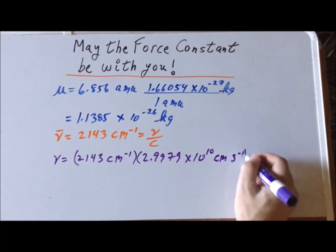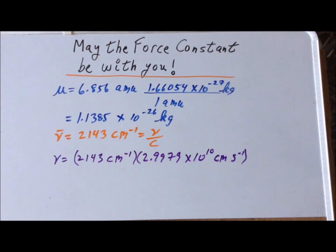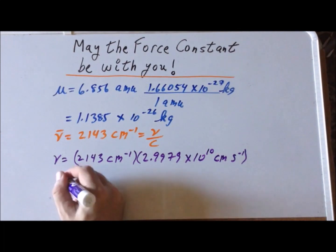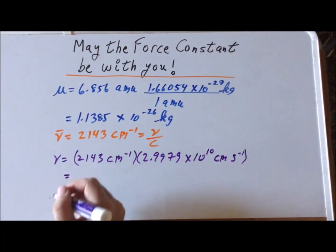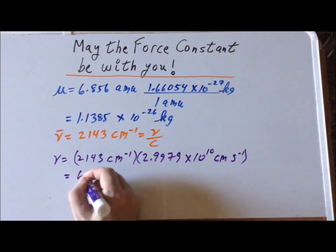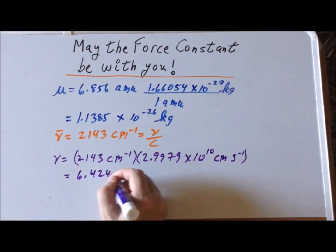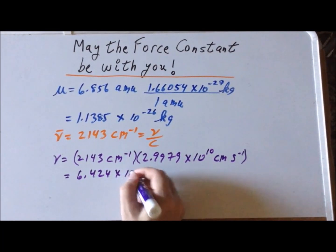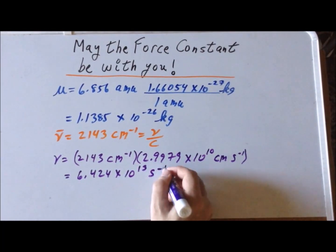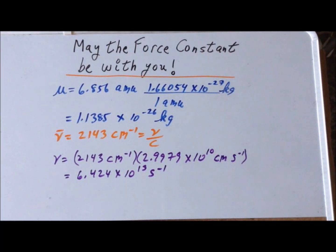Since we're using centimeters per second, it's times 10 to the tenth. This gives us 6.424 × 10^13 inverse seconds. As a point of comparison, frequencies for visible light tend to be in the range of 10^14 inverse seconds, so these are lower frequency by about a factor of 10.